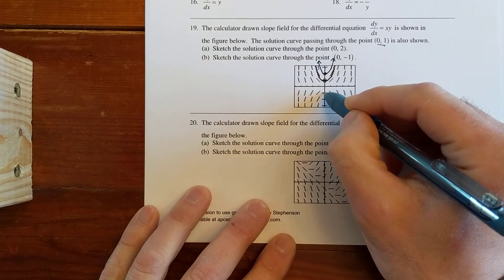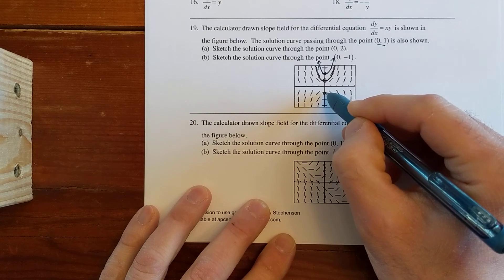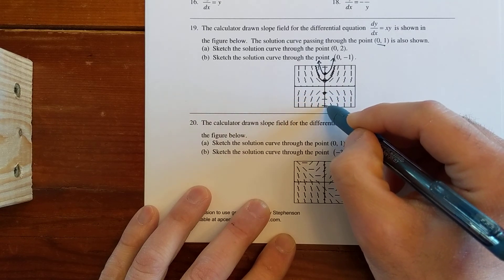The other one at (0,-1) would begin right here, and as we move to the right here, it looks like because of these horizontal segments right here,